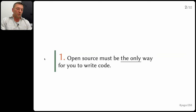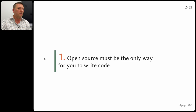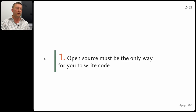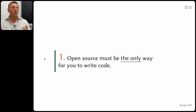Recommendation number one: I believe that open source must be, for every one of you, the only way of developing software — not one of the ways, but the only way. I strongly believe that open source will in time — maybe already is for some companies — become the only mechanism of writing code. As you know, there are two ways: proprietary code, where companies keep code in private repositories, and open source, where anybody can see the code you write.